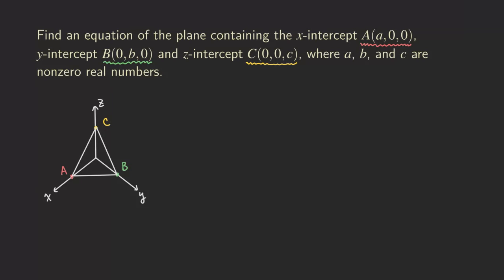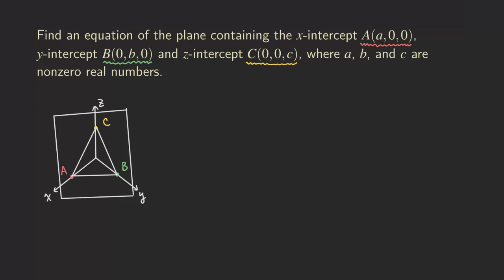What we are trying to do right now is to find the plane that contains this triangle. In general, we just need the normal vector and a point that lies in the plane. We already have three points, so we now just need to figure out the normal vector that's perpendicular to the plane. That can be found by doing the cross product of two vectors that lie in the plane. We can form two vectors using any two of those points.